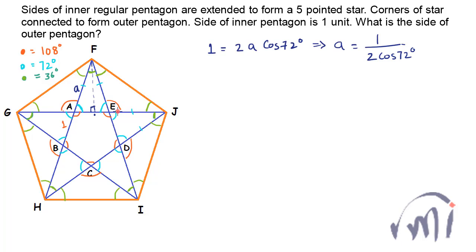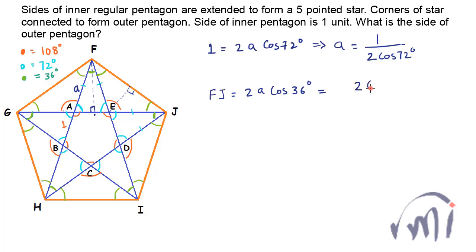Since triangle FEJ is also an isosceles triangle where FE equals EJ, if I draw a perpendicular from point E to side FJ, this will also be 90 degrees and this point will be the midpoint of FJ. And FJ will be equal to 2 times A cos 36 degrees. Or you can say FJ equals 2 times cos 36 degrees divided by 2 cos 72 degrees.